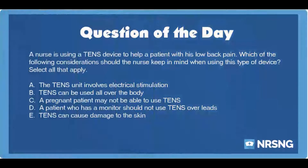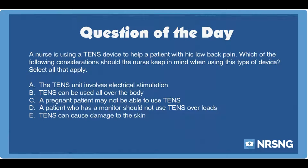The nursing category is musculoskeletal. The NCLEX category is basic care and comfort. A nurse is using a TENS device to help a patient with his low back pain. Which of the following considerations should the nurse keep in mind when using this type of device? Select all that apply.